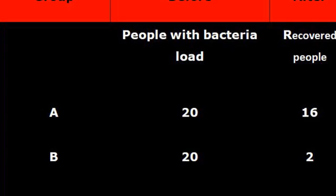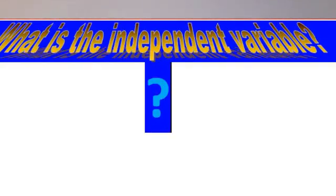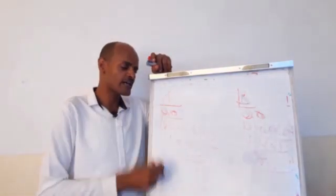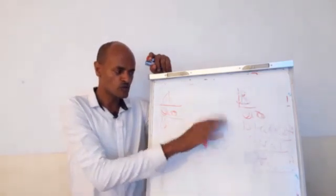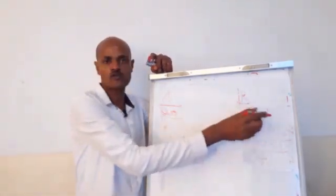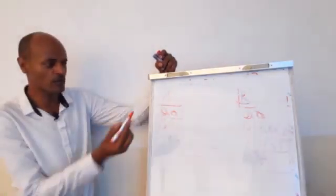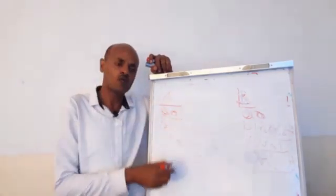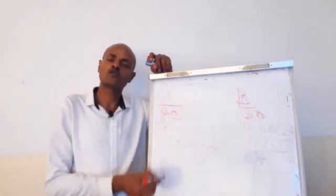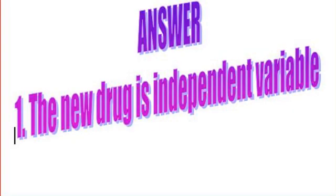What is the independent variable? The independent variable is a variable that can affect the outcome of an experiment. In this case, the new drug is the independent variable. The dependent variable is the number of recovered people.